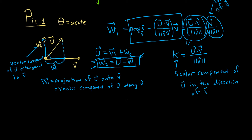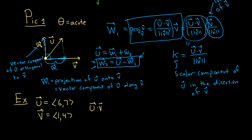For our example, we have u equal to the vector (6, 7), and v equal to the vector (1, 4). All we have to do is use the formula. We need u dot v: that's 6 times 1 plus 7 times 4, which is 6 plus 28, giving us 34. So u dot v is 34.